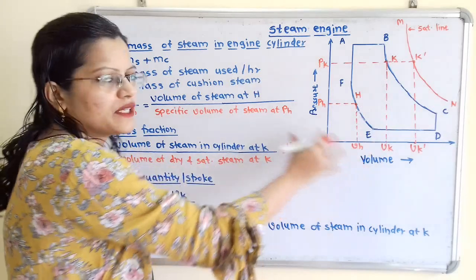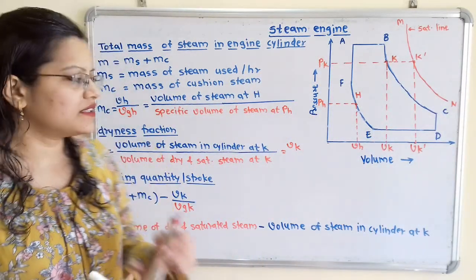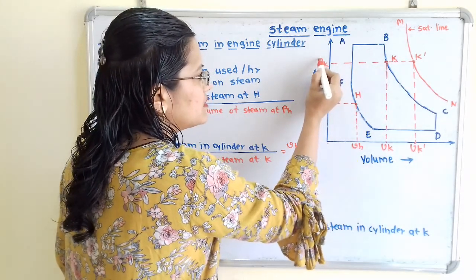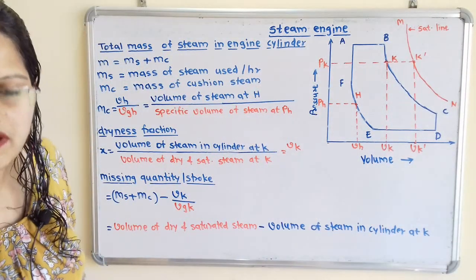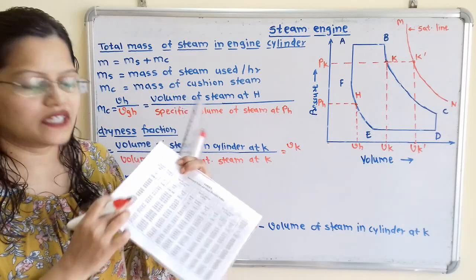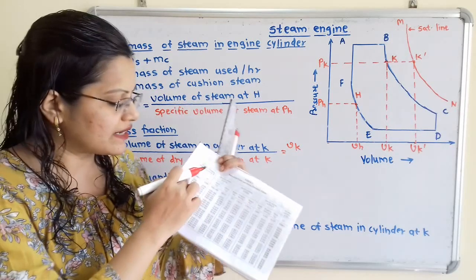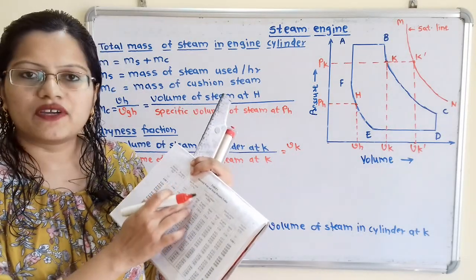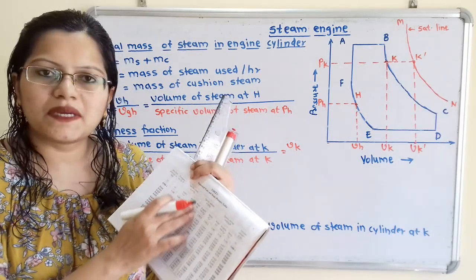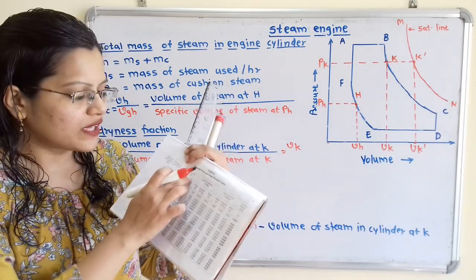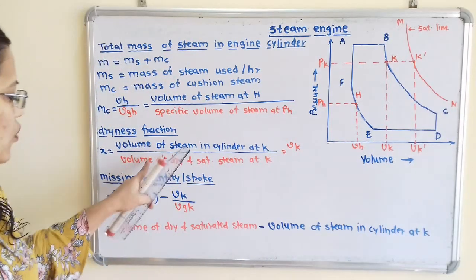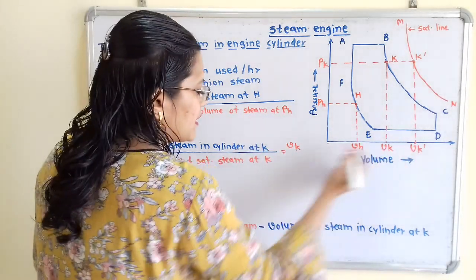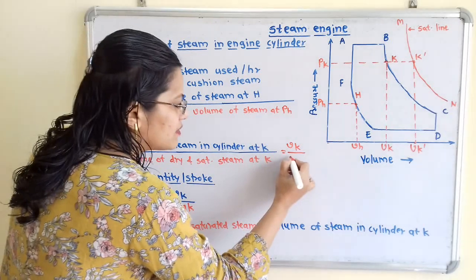If this diagram is not available, there is a second method: at point K, refer to pressure pk, use the pressure table from the steam table, and find vg — the specific volume for dry and saturated steam. Since vg is in meter cube per kilogram (for 1 kg), we multiply by the total mass of steam inside the cylinder to get the total volume vk dash. This gives the formula for dryness fraction.